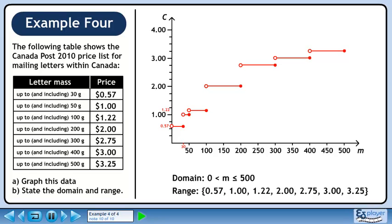The domain is between 0 and 500 grams. The range can be written using a discrete list for the prices. We have 57 cents, $1, $1.22, $2, $2.75, $3, and $3.25.